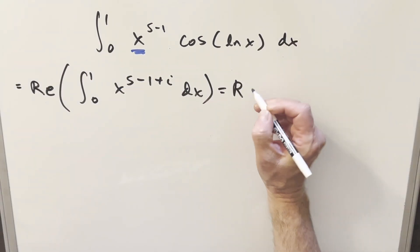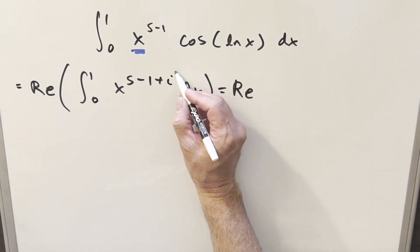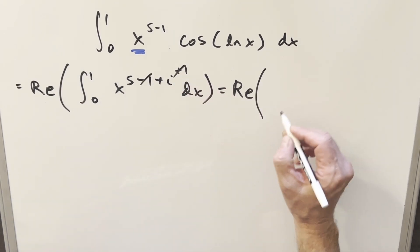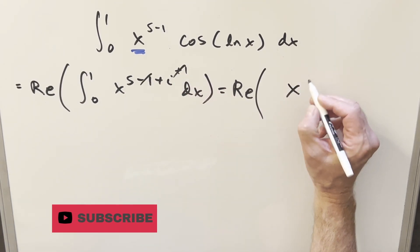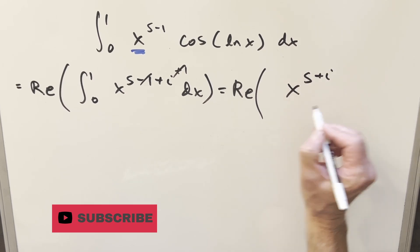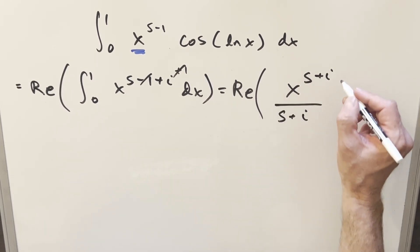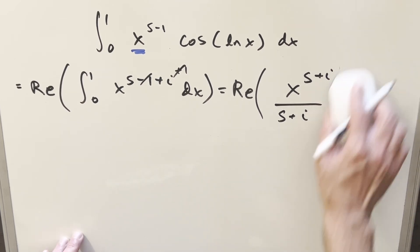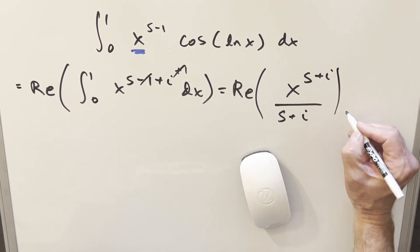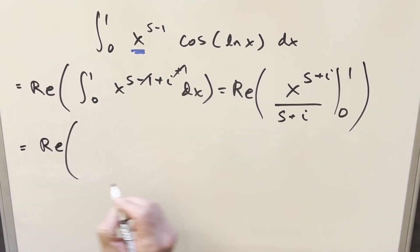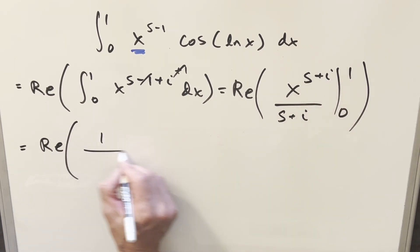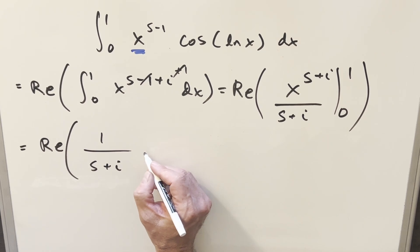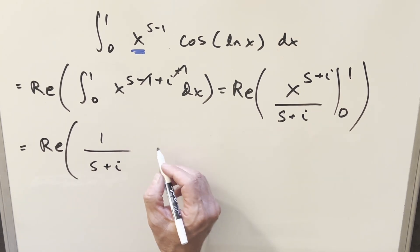We go ahead and integrate: add plus 1 to the power, which cancels with the minus 1. So we're left with x to the s plus i over s plus i, evaluated from 0 to 1. Evaluating at 1, it doesn't matter what the exponent is — it's just 1 over s plus i. Evaluating at 0, that's 0, so we leave that off.